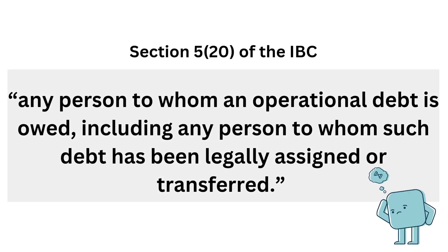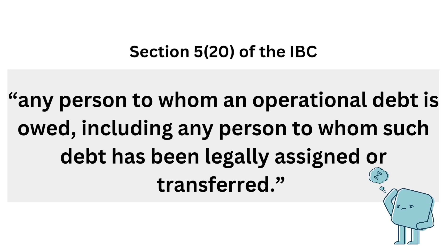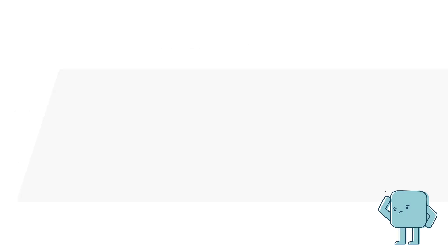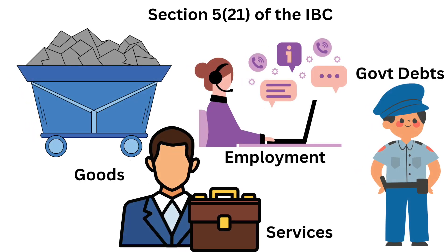Section 5 subsection 20 of the Insolvency Bankruptcy Code defines an operational creditor as any person to whom an operational debt is owed, including any person to whom such debt has been legally assigned or transferred. Section 5 subsection 21 states operational debt to include debt with respect to goods, services, employment, and debts for the repayment of dues payable to the central or state government.